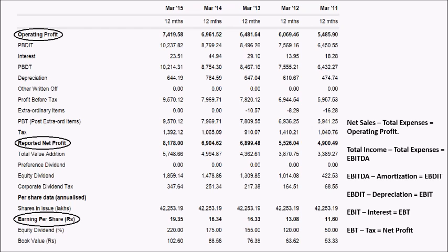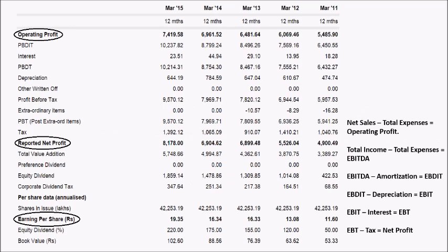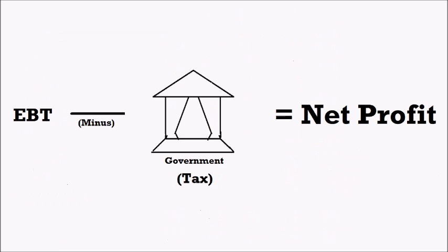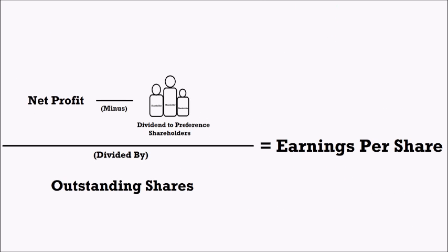Next, by subtracting interest on loans from PBIT we get PBT or EBT, which means profit before tax or earnings before tax. The change in PBIT after subtracting the interest gives us a rough idea of the total debt of the company.